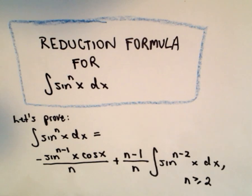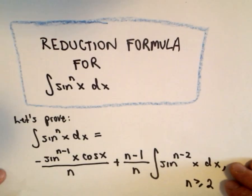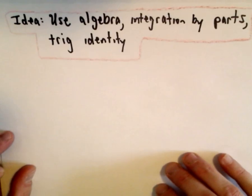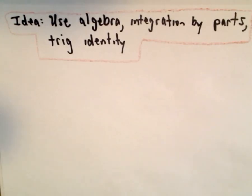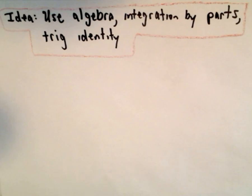In this video all I'm going to do is justify this formula. I'm not going to do any examples using this formula, but perhaps in another video I will do that. The basic idea to justify this is we're just going to use some algebra, some integration by parts, and we're going to use a trig identity at one point. After that it's just a little bit of algebra keeping track of things.